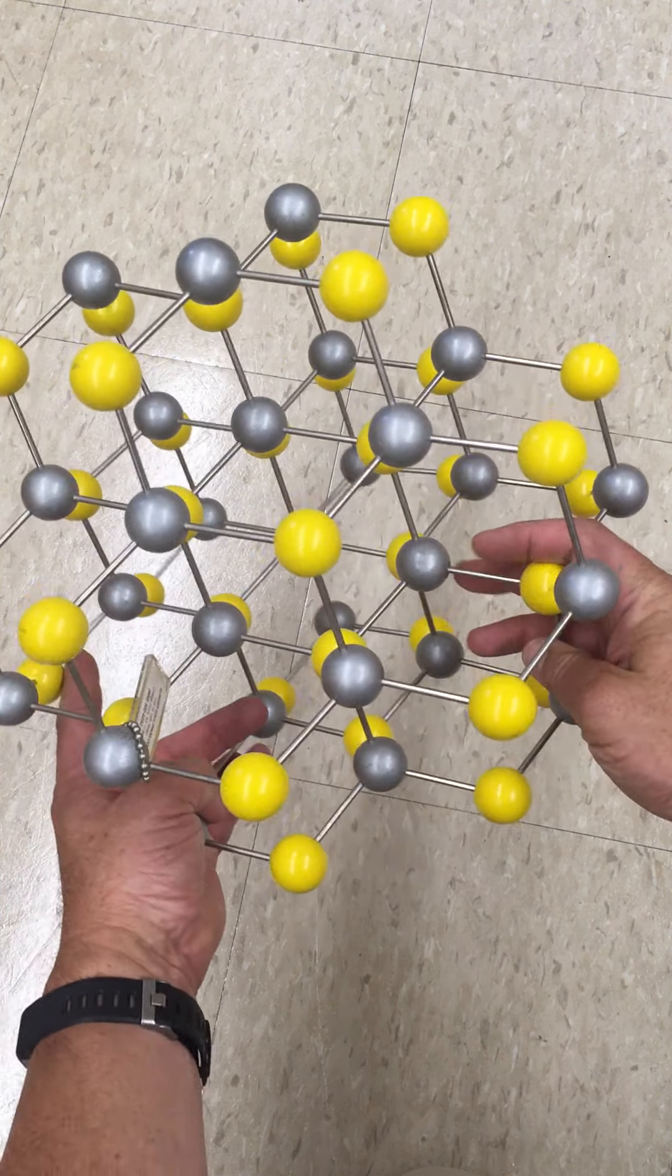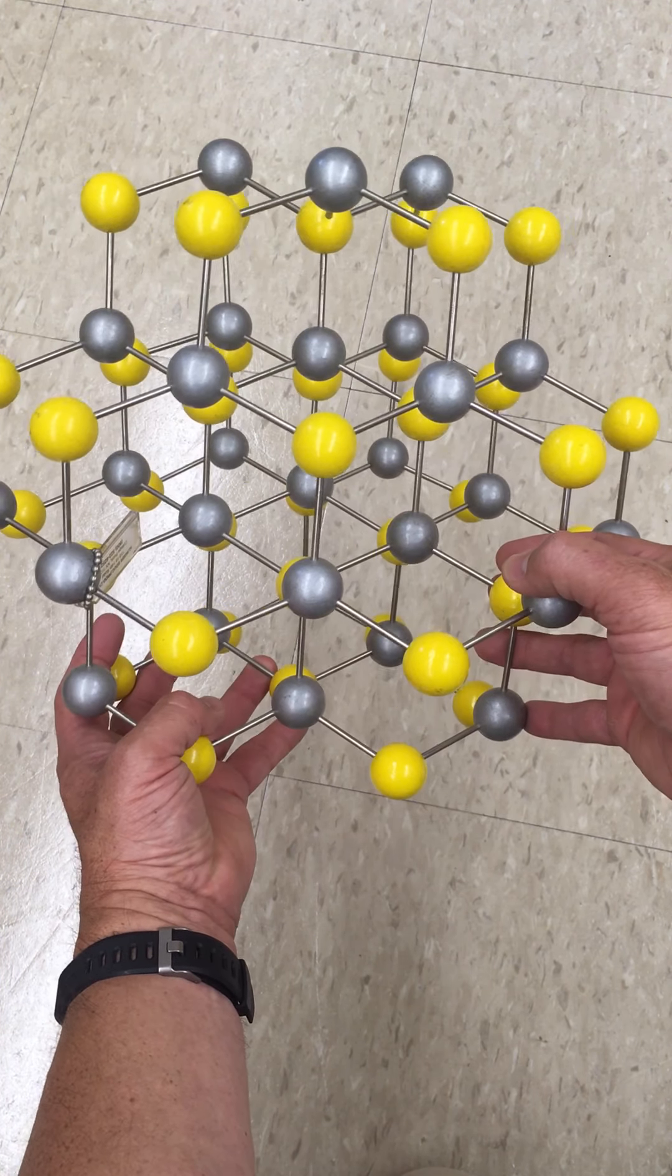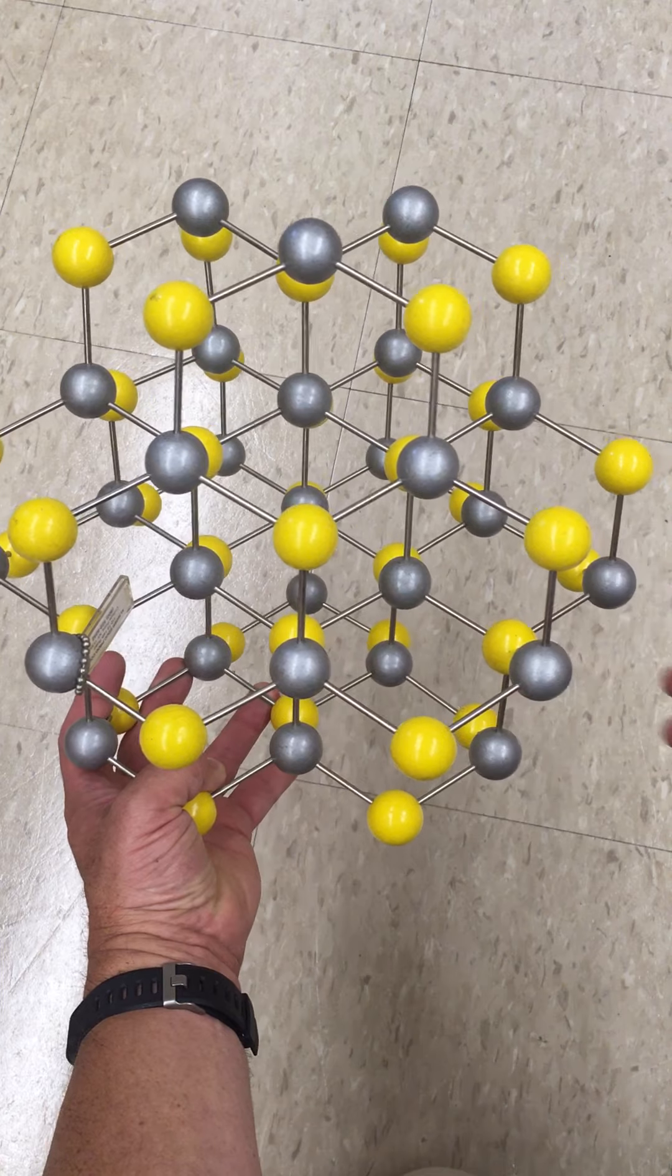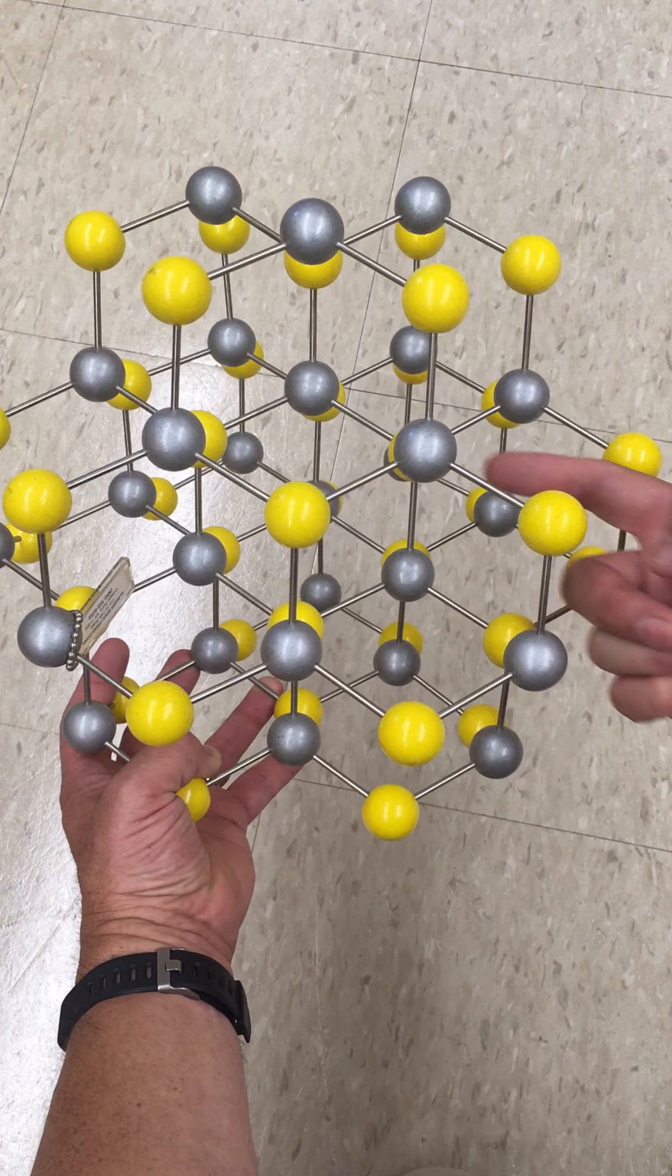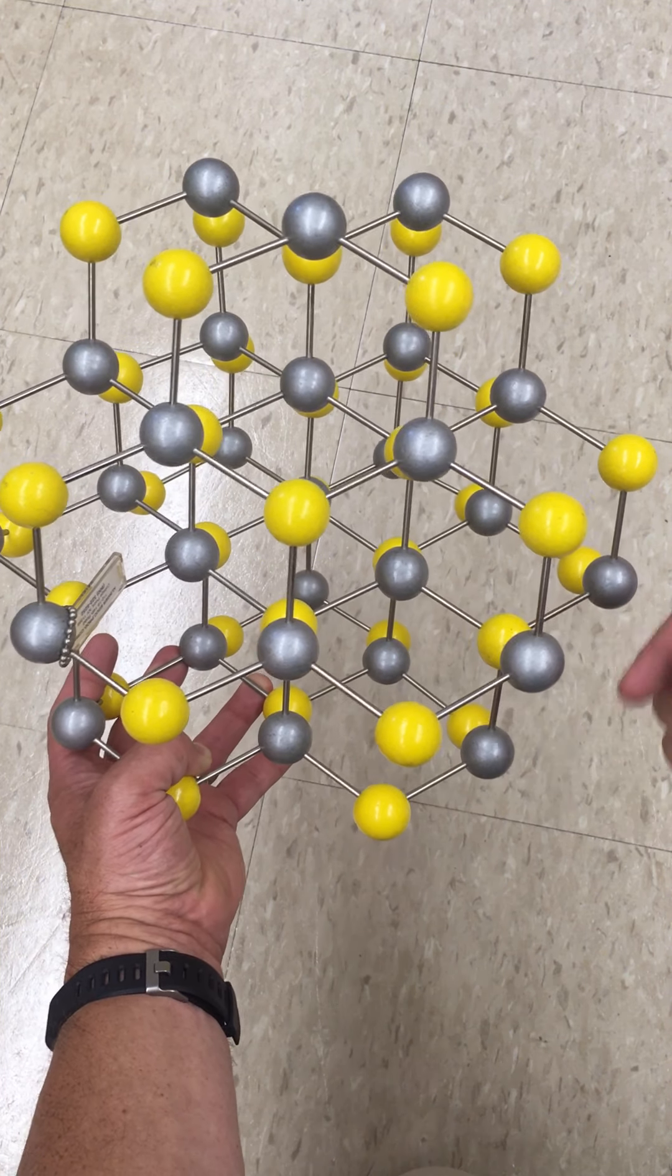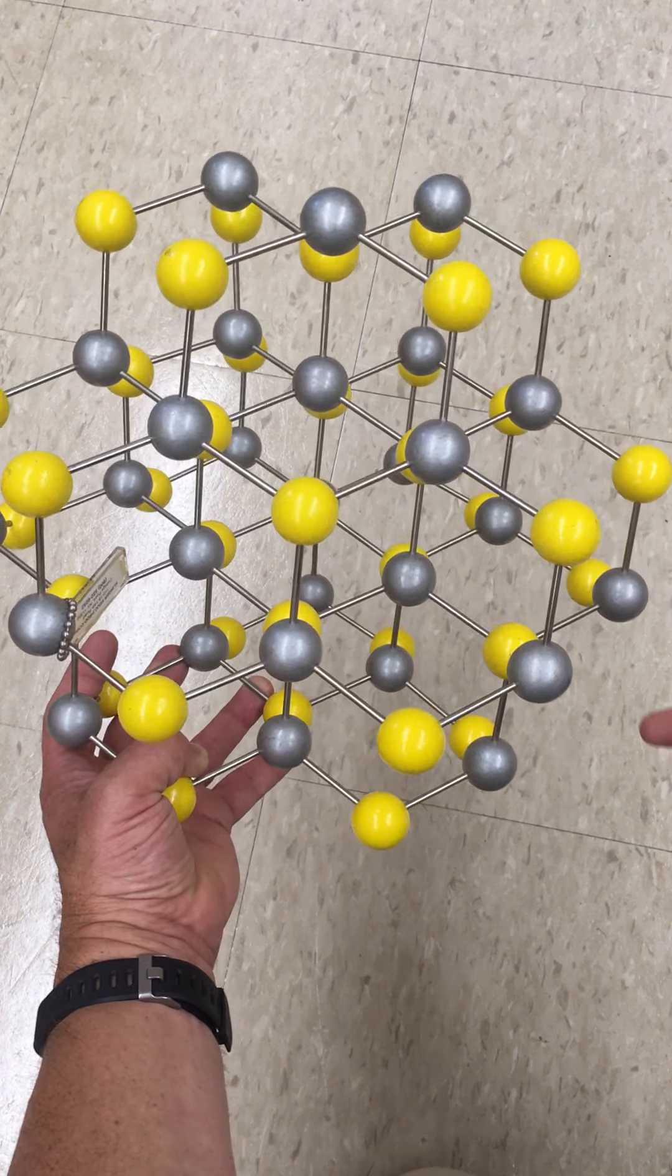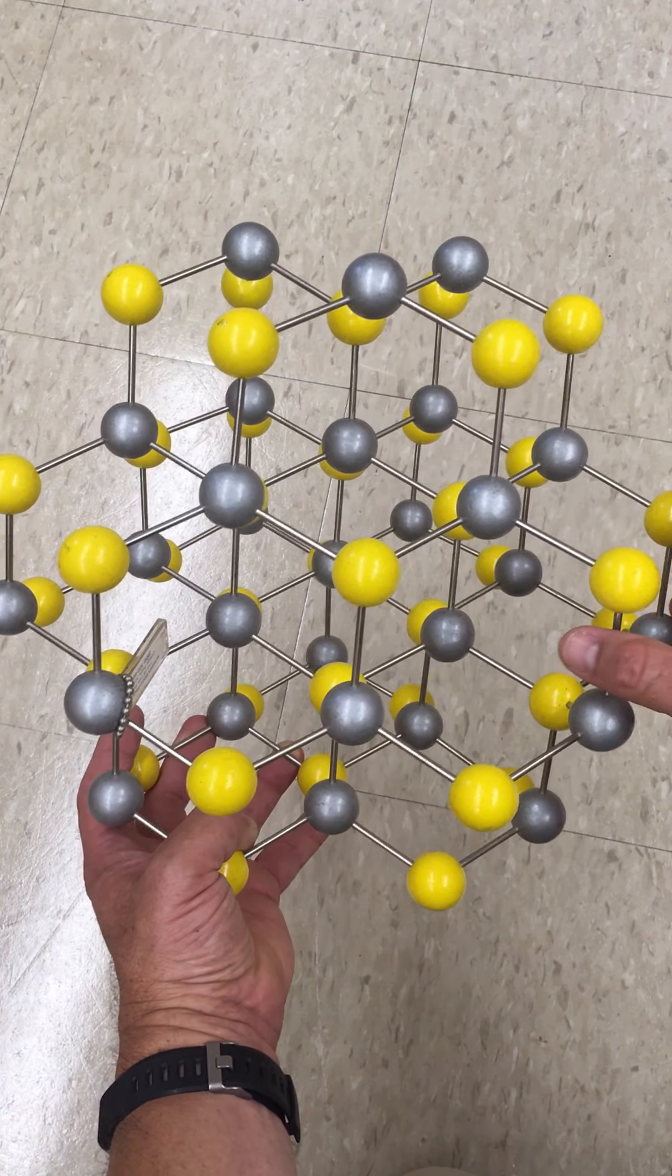If I turn it this way, you might be able to see that similar situation here, where we have a sulfur layer, an A layer here, a B layer which doesn't line up with the A layer, and then a C layer which doesn't line up with either the B or the A layer, and then finally down here an A layer which matches the A layer up here.